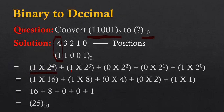Similarly, the next digit 1 is multiplied by 2 raised to 3. Then 0 is multiplied by 2 raised to 2, then 0 multiplied by 2 raised to 1, then 1 multiplied by 2 raised to 0. So all the multiplications are listed here.